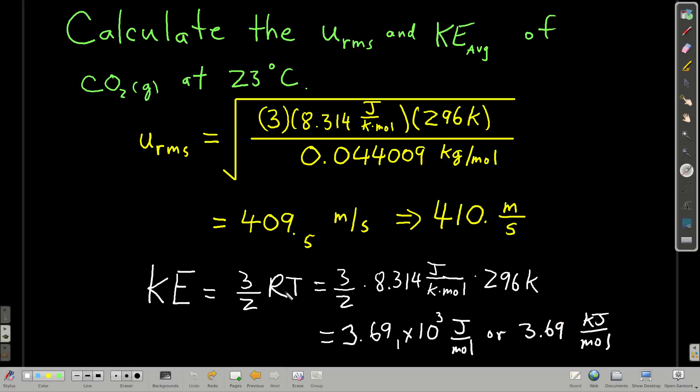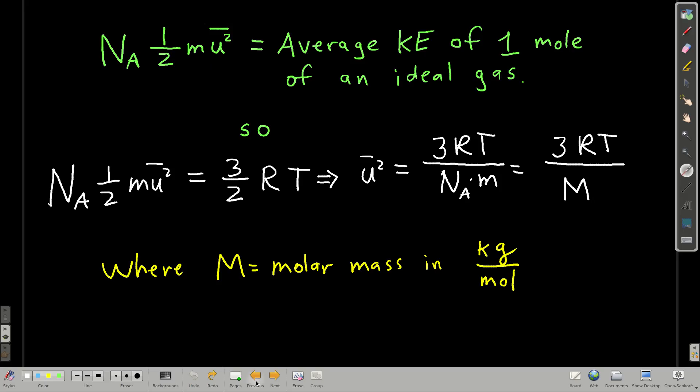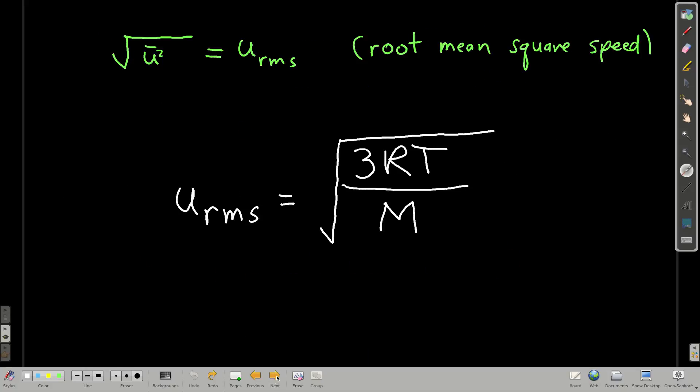We could have now, notice, I did it this way, but you could have just as well done this. You could have used this equation right here. You could have found the mass of one molecule. Well, actually, Avogadro's number times this is the molar mass. You could have used the molar mass times the mean square speed times a half. But I think it's easier just to do 3 halves RT.